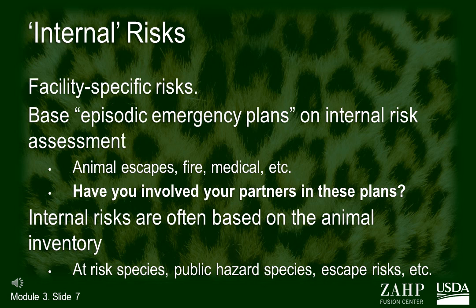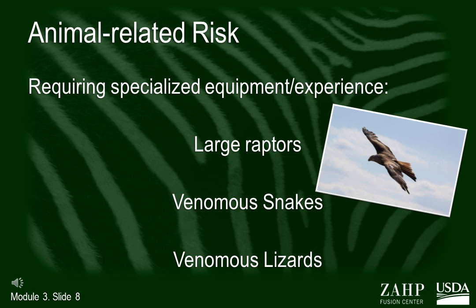You need to share this information in partner briefings, documents, meetings, and with facility staff. Internal risks are often based on the animal inventory. Animals may present risks to people, to wildlife, and to agricultural animals as well. Animals also vary in their own vulnerability to various types of disasters and incidents. Species vulnerabilities are risk factors as well.